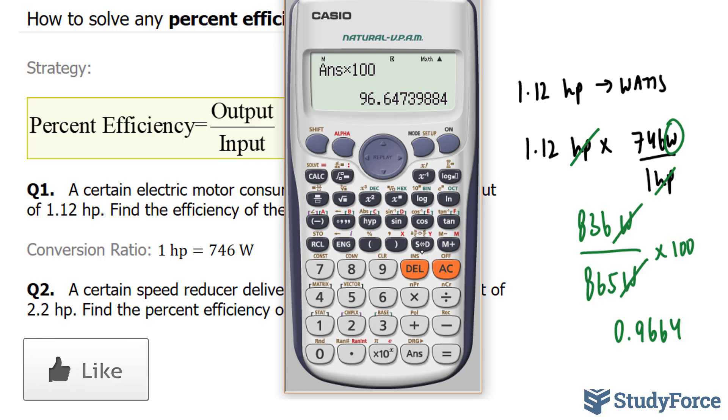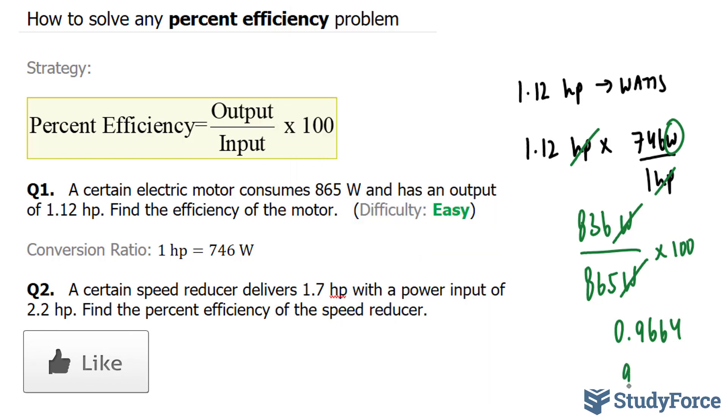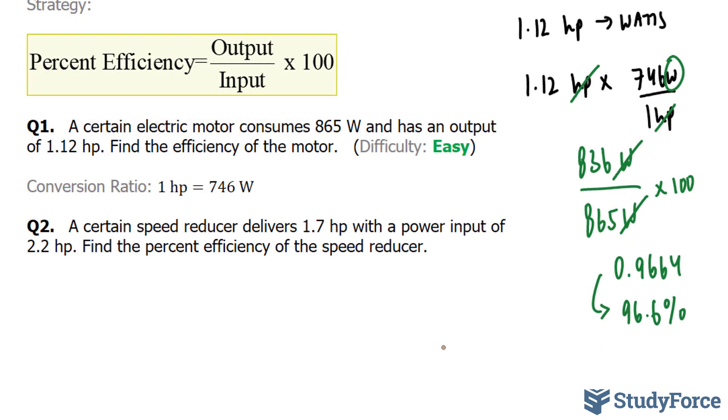And to three decimal places, we end up with 96.6% efficiency, which is really good for a motor. In question two, we're asked: a certain speed reducer delivers 1.7 horsepower with a power input of 2.2 horsepower. Find the percent efficiency of the speed reducer. So our input here is 2.2.